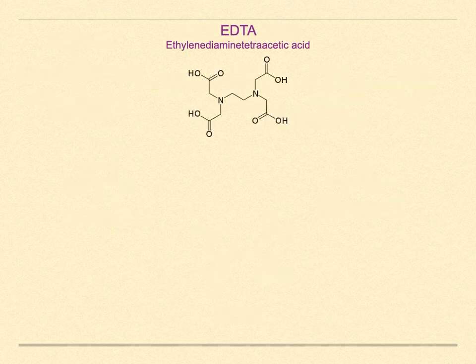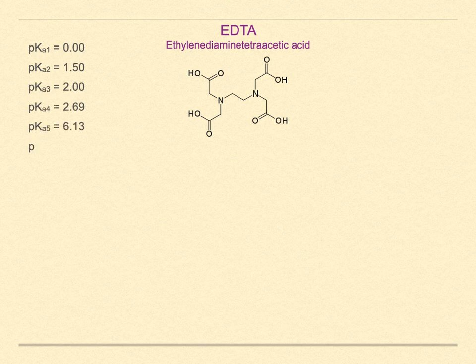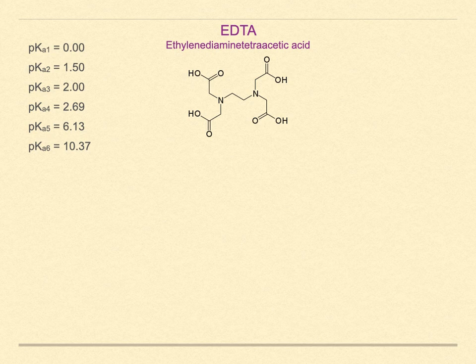Ethylenediaminetetraacetic acid, or EDTA, is a hexaprotic acid. The six pKa values are given here. The first four are protons on the carboxylic acid groups, and the last two are the two tertiary amines. Y is the symbol usually given to represent the basic EDTA molecule.